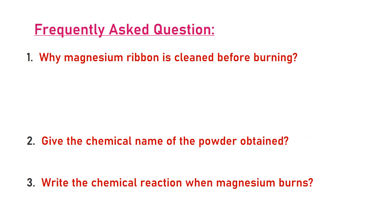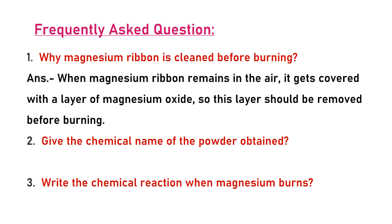Frequently asked questions: First question — why is the magnesium ribbon cleaned before burning? Because when magnesium ribbon remains in air it gets covered with a layer of magnesium oxide. This layer should be removed before burning. The atmospheric oxygen reacts with magnesium and forms magnesium oxide around the ribbon, so before burning we have to rub and remove that magnesium oxide.